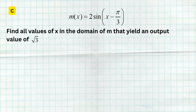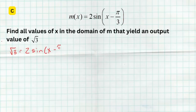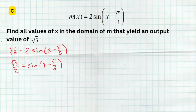Finally, in Section C you're given one function and asked to do some solving. Here m(x) = 2sin(x − π/3), and we want to find all values of x in the domain that yield an output of √3. Set √3 = 2sin(x − π/3). First isolate the trig function: divide both sides by 2 to get √3/2 = sin(x − π/3). Don't add π/3 yet — the input (x − π/3) is an angle, and we first need to figure out what angle gives an output of √3/2.